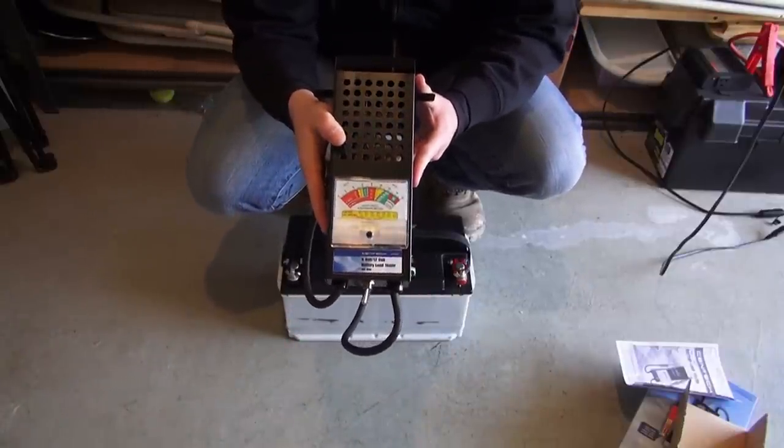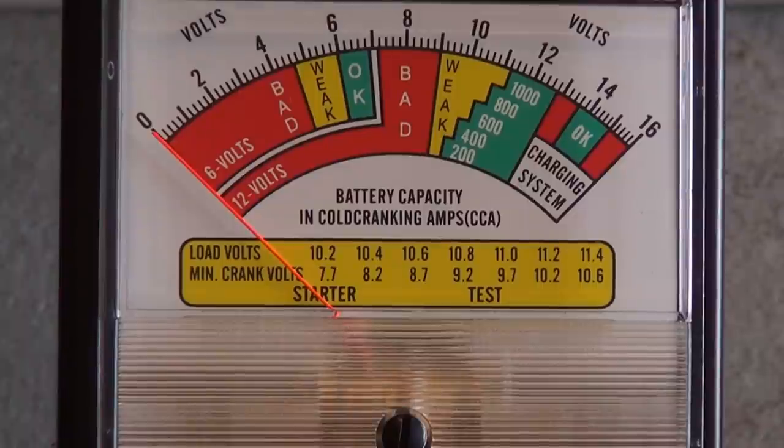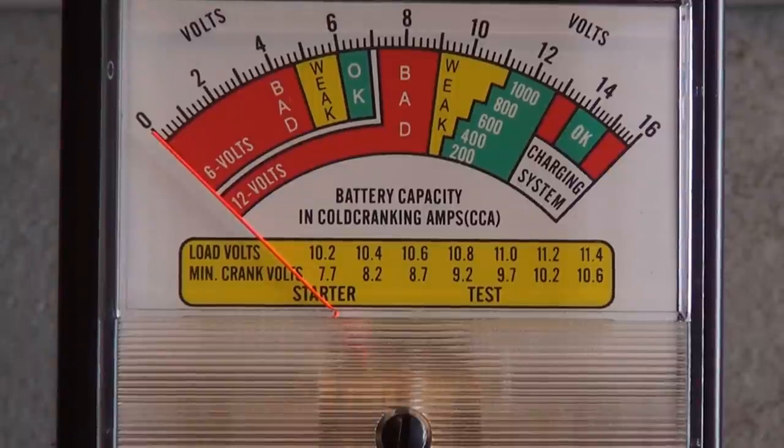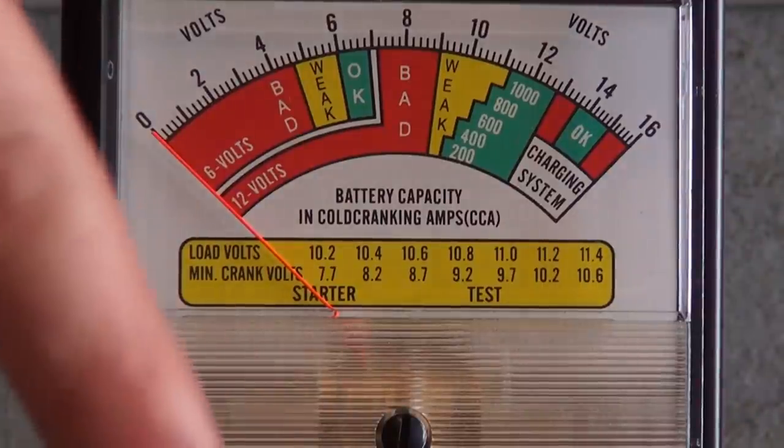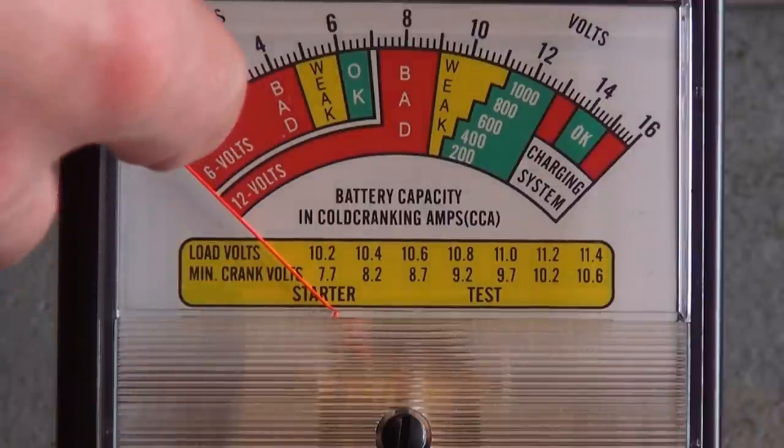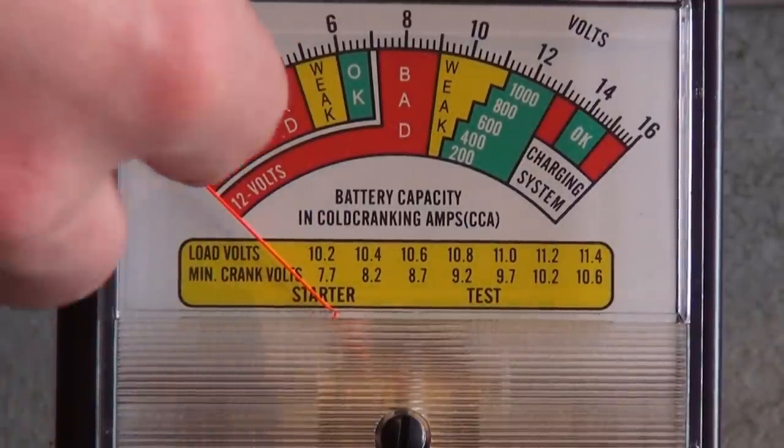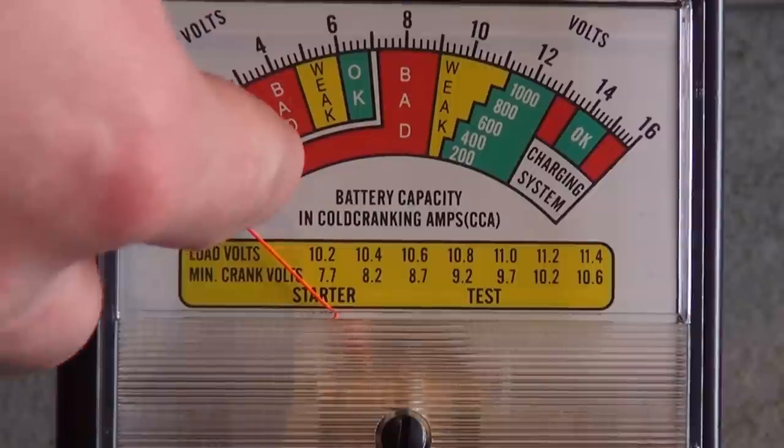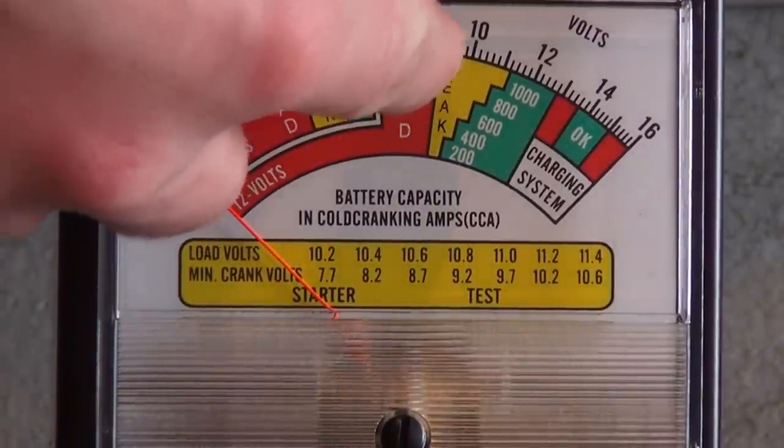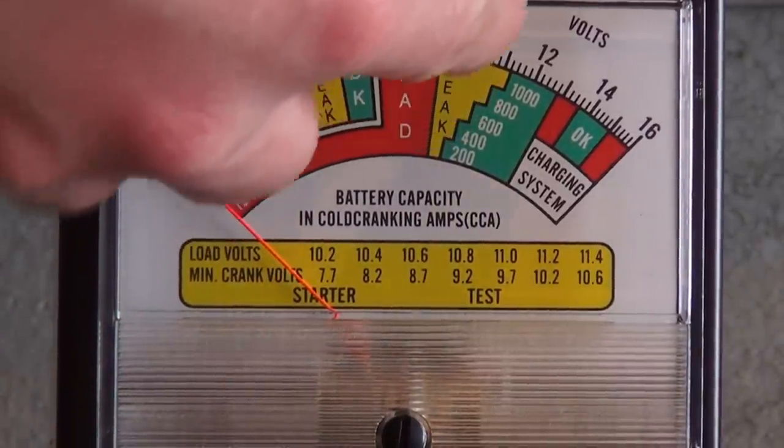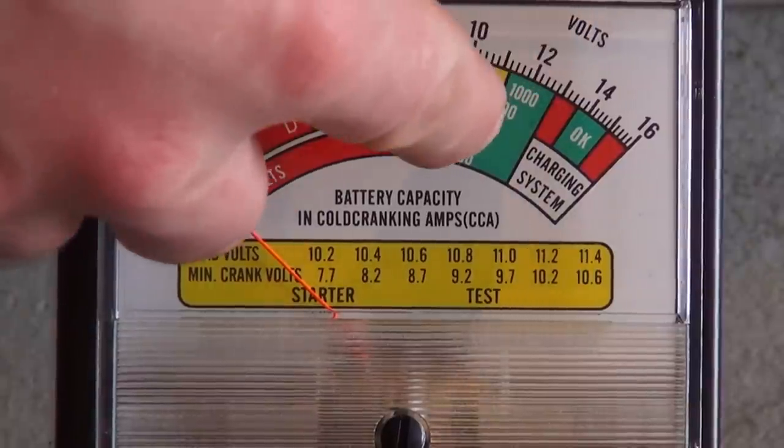I'm going to zoom down on the gauge and I'll explain everything. Okay, the way to read this gauge is it's two parts, actually three parts. What you have here is the 6 volt right up top here, the 6 volt battery test. Below that you see it says 12 volt. It goes all the way out to the bad. The weak is the yellow and the green is the good.